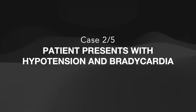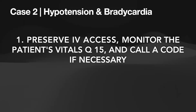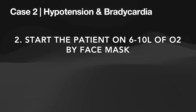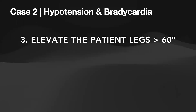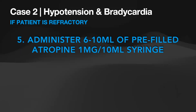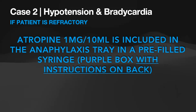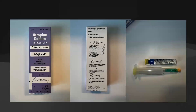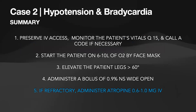Case number two: a patient presents with hypotension and bradycardia. First, preserve IV access, monitor the patient's vitals, and call a code if necessary. Second, start the patient on 6 to 10 liters of oxygen. Third, elevate the patient's legs more than 60 degrees. Fourth, administer a bolus of normal saline wide open. If the patient is refractory, administer 6 to 10 mils of a pre-filled atropine syringe. Atropine 1 milligram per 10 mils is included in the anaphylaxis tray, and instructions are on the back of the box. Here is the summary slide for case number two.